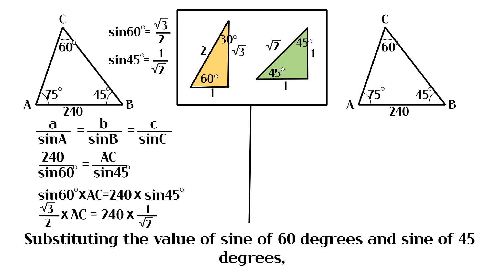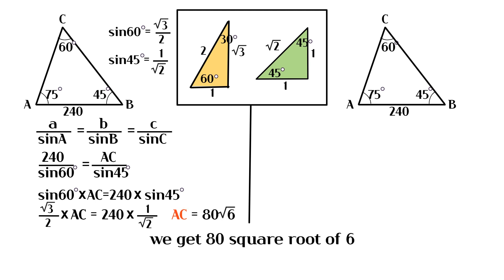Substituting the value of sine of 60 degrees and sine of 45 degrees, we get 80 square root of 6.